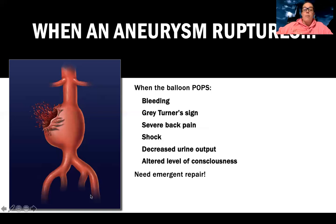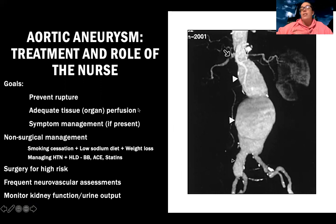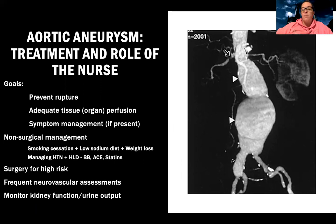If it ruptures, they're going to need an emergent repair. The overall treatment goal and role of the nurse — and look how big these aneurysms can get, they can be pretty scary — is to prevent rupture, ensure adequate tissue and organ perfusion, and manage symptoms. If it's not too large or causing serious problems, I'll try to manage it conservatively so it doesn't get worse.